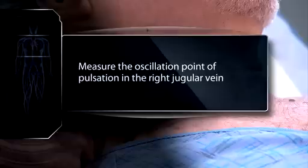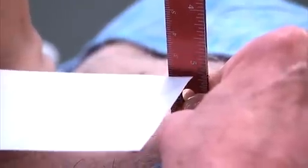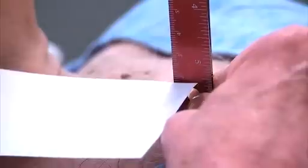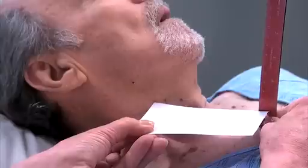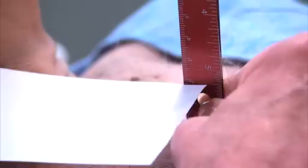Measure the oscillation point of pulsation in the right internal jugular vein using the following technique. Extend an elongated rectangular object, such as a 3x5 card, from the meniscus point of pulsation, while extending a centimeter ruler vertically from the sternal angle, making a right angle. To establish the true vertical and horizontal lines, place your ruler on the sternal angle and line it up with a vertical line in the room. Then place your card or other rectangular object at an exact right angle to the ruler. This constitutes your horizontal line. Make sure one edge of the card is at the point of oscillation of the jugular venous pulsations, making sure to keep the card horizontal.